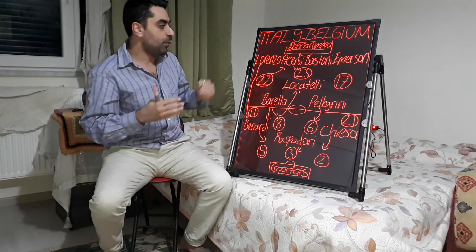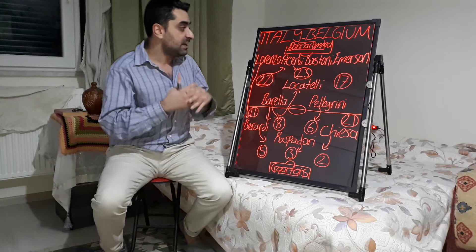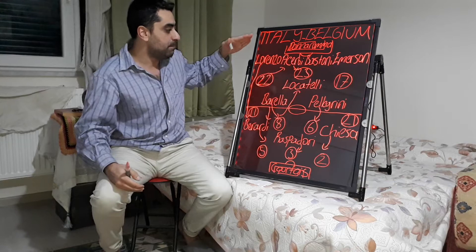At the beginning of the second half, Italy found the goal with Barella. Belgium then made two substitutions in the second half.